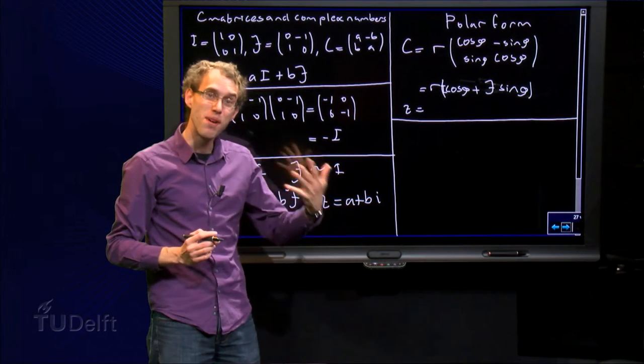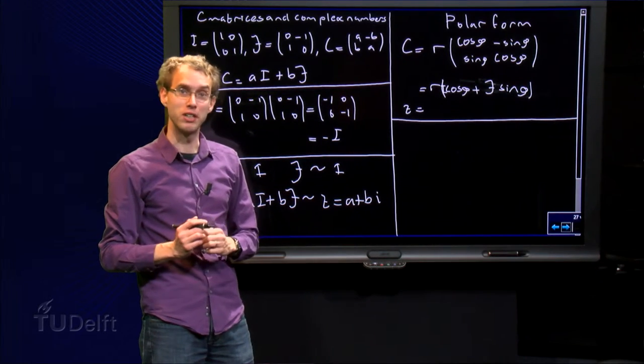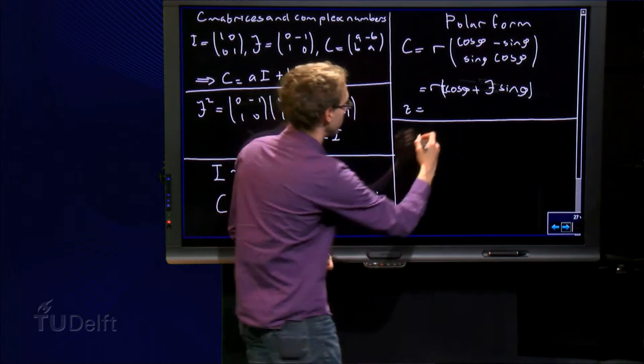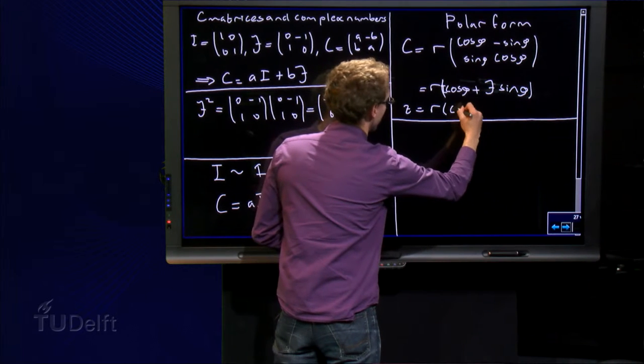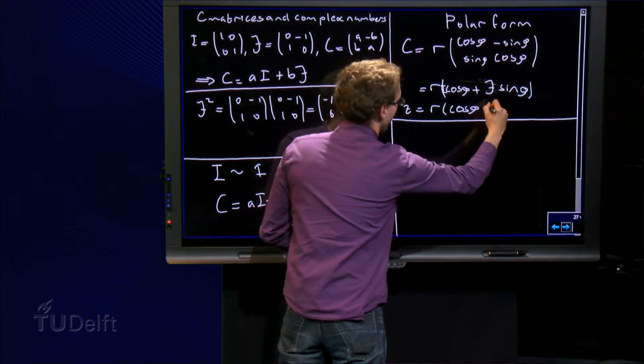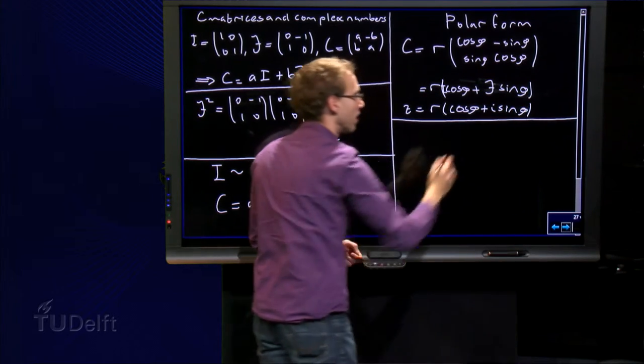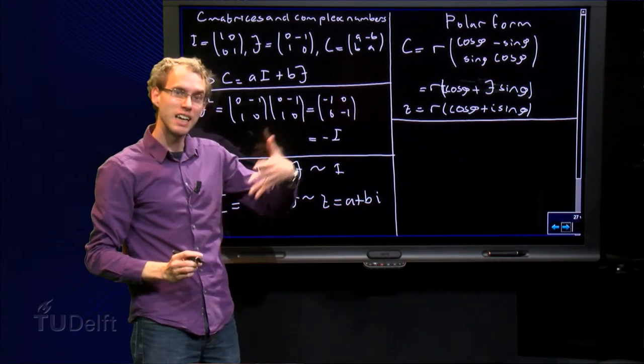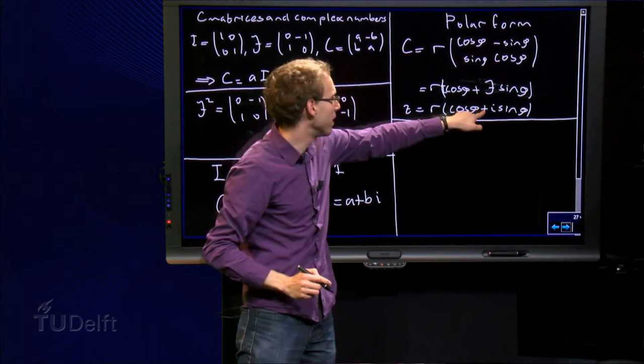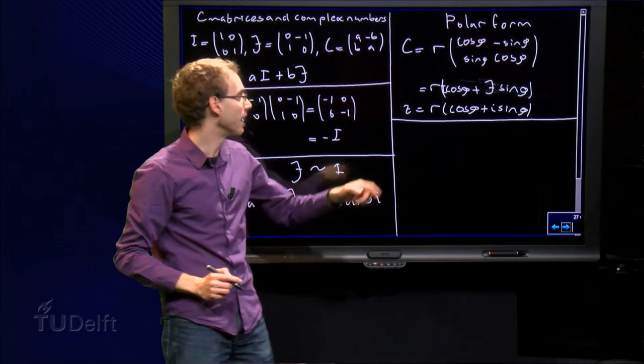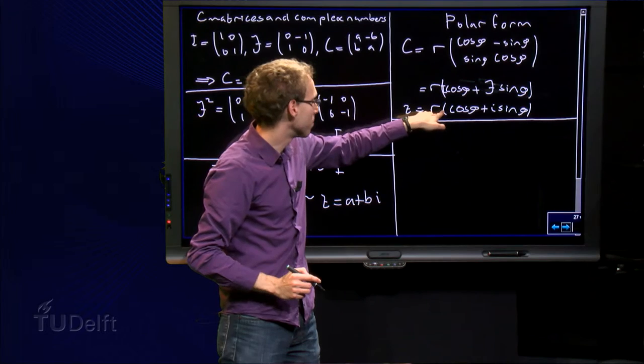So we see that they look exactly the same, where the matrix J plays the role of the complex number i, and the matrix I plays the role of the number 1.